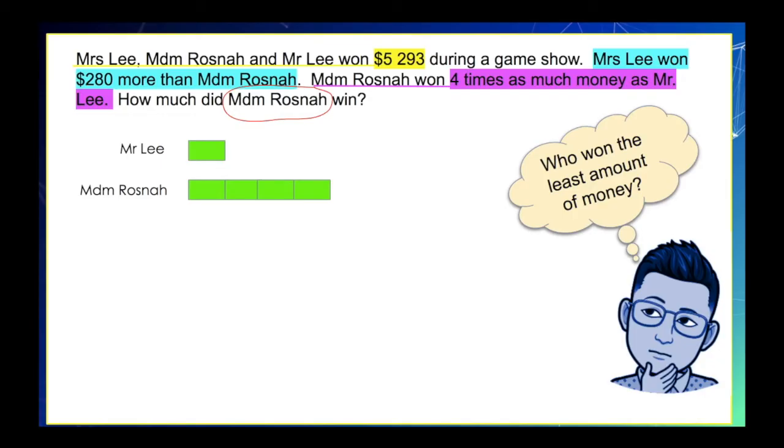Next step, Mrs. Lee won $280 more than Madam Rosnah. So, we can draw similar bar models, but with $280 extra. And in our model, we can label it like this.